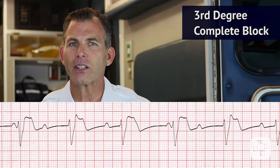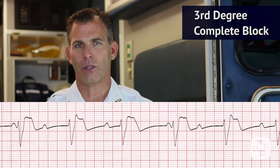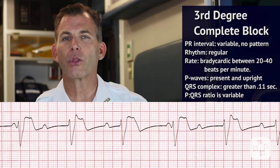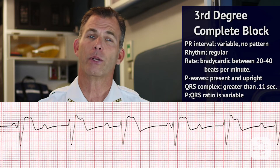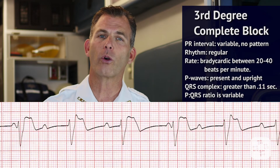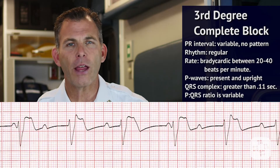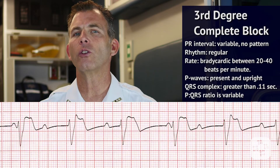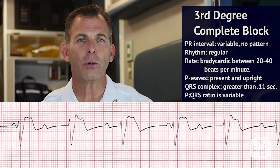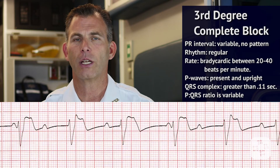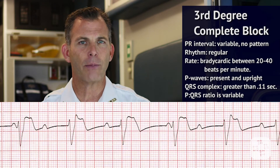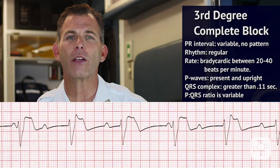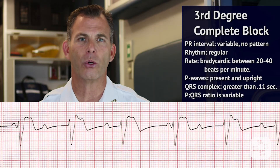In third degree heart block, the ECG shows a regular rhythm but the rate is bradycardic, between 20 to 40 beats per minute. P waves are present and upright, while the P to R interval is variable with no real pattern. The QRS complex is greater than 0.11 seconds and the P wave to QRS ratio is also variable.